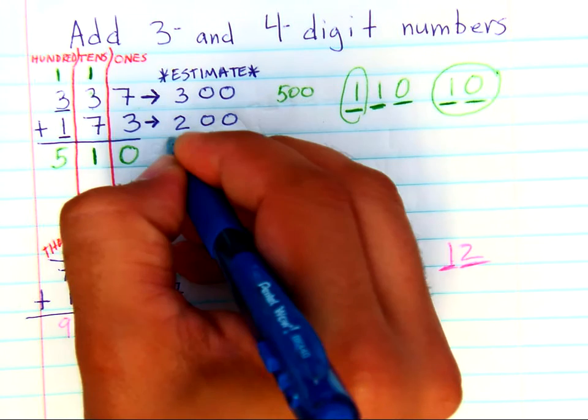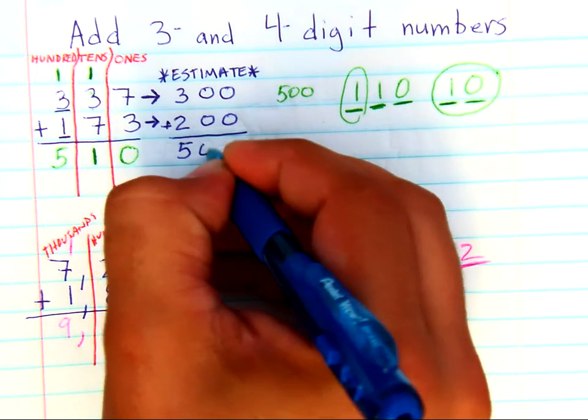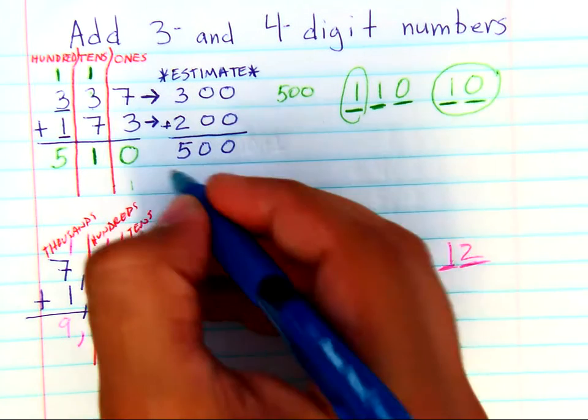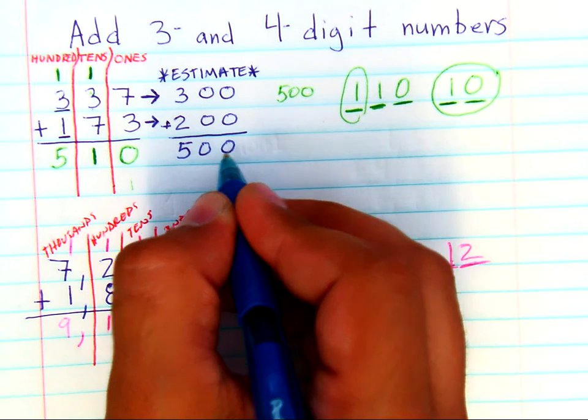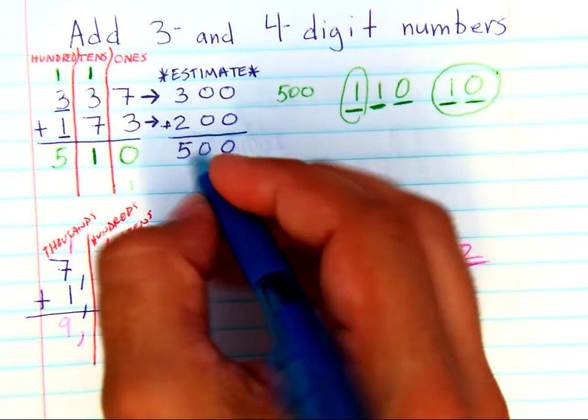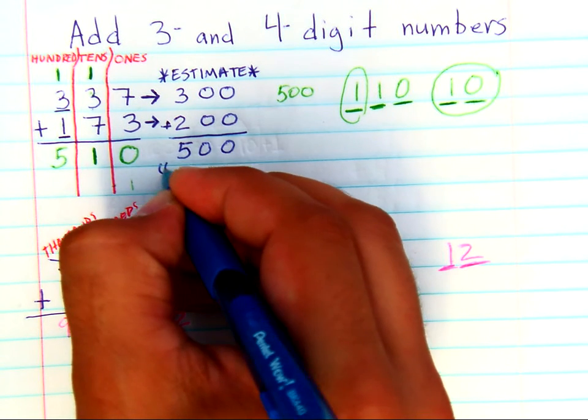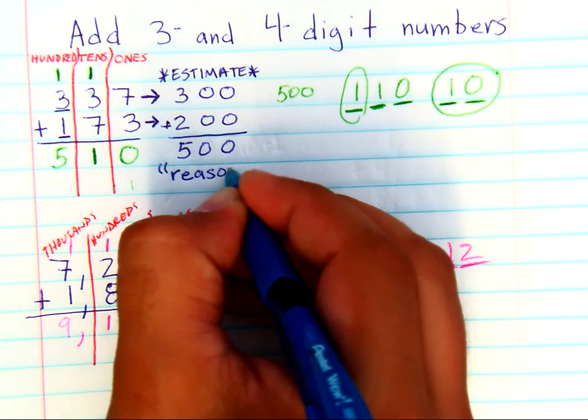So when you add together these rounded numbers, you get 500. That means 500 is an estimate that's close to the real answer. So I refer to this as a reasonable answer.